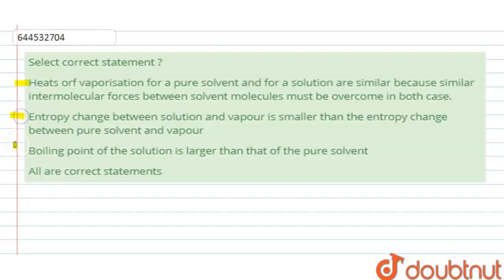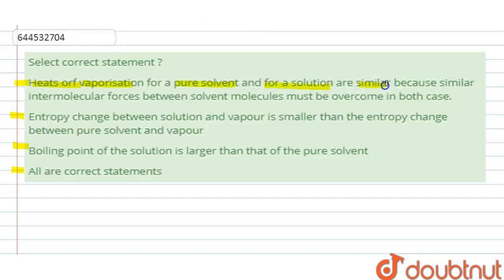Hello everyone. In this question we have been given three statements and we have to say which are correct, or if all the statements are correct. In the first statement it is said: heats of vaporization for a pure solvent and for a solution are similar because similar intermolecular forces between solvent molecules must be overcome in both cases.